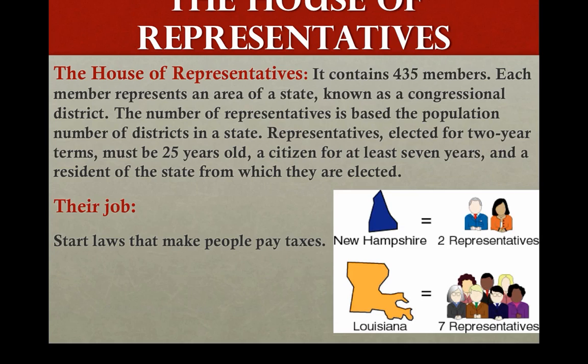The House of Representatives contains 435 members. The number of members is based on the population of each state. For example, New Hampshire has two representatives, and Louisiana has seven representatives. States with larger populations have more representatives than states with smaller populations.